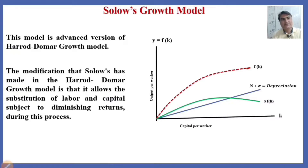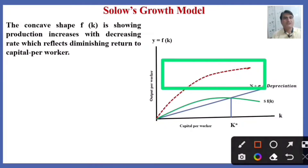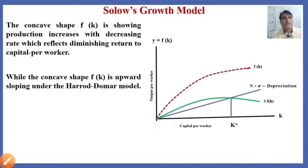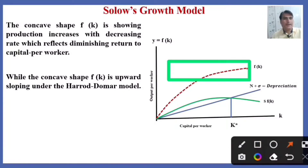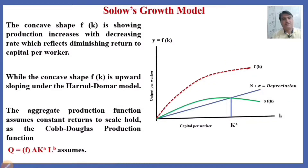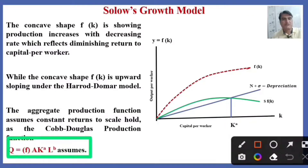If more capital is employed in the economy, then production will increase, unemployment will be reduced, the economy will reach full employment level, and savings will also increase. So saving is a function of capital. This is the point where saving and investment are equal, and K* is the steady state equilibrium of the economy, which the Harrod-Domar Model failed to explain. The concave shape shows production increases at a decreasing rate, reflecting diminishing returns to capital per worker. The aggregate production function assumes constant returns to scale, represented by the Cobb-Douglas production function.